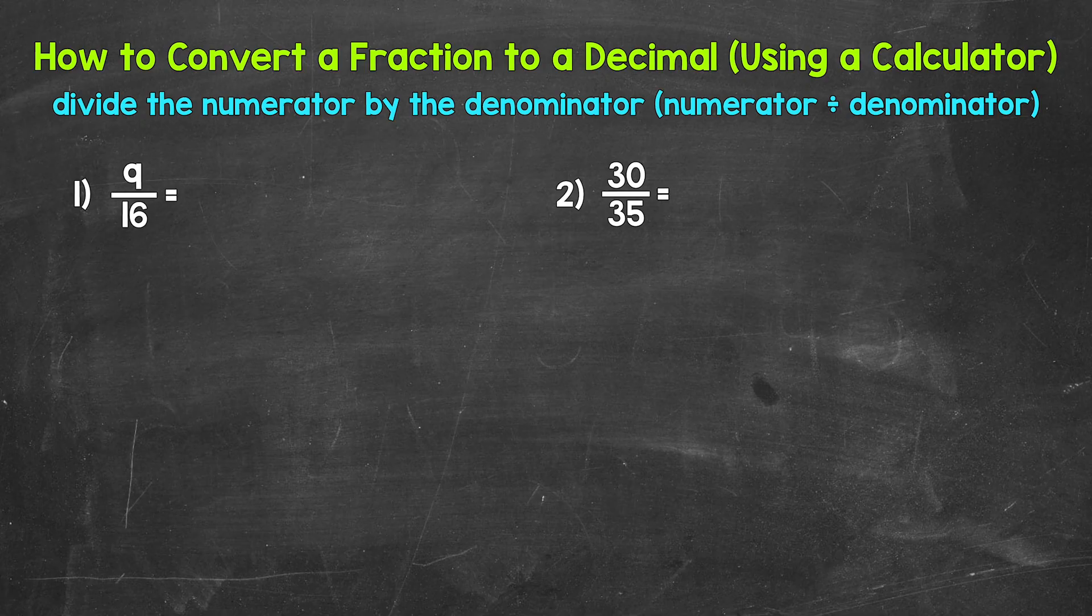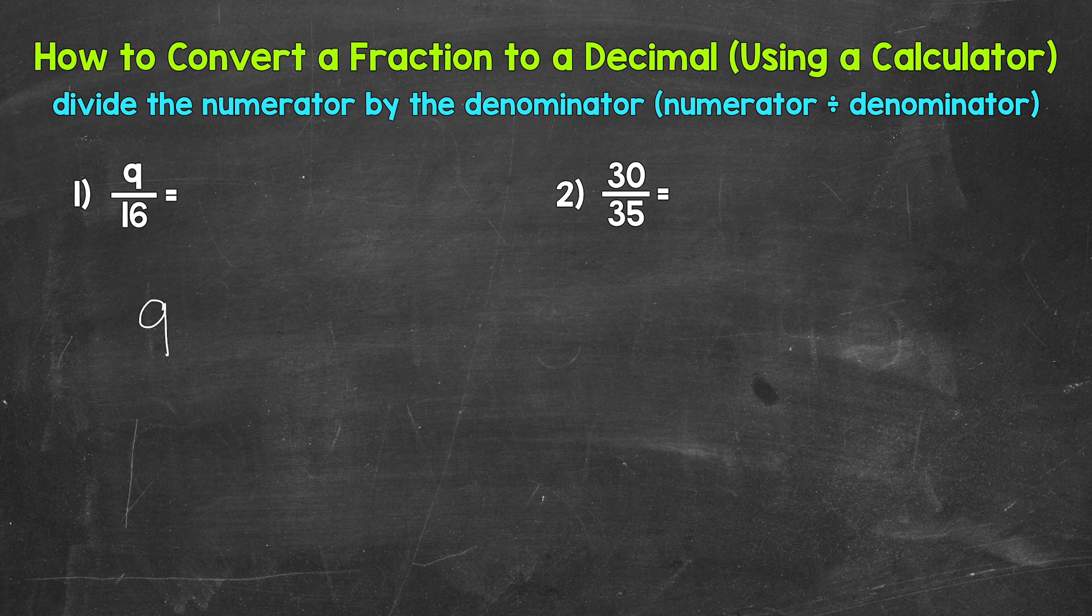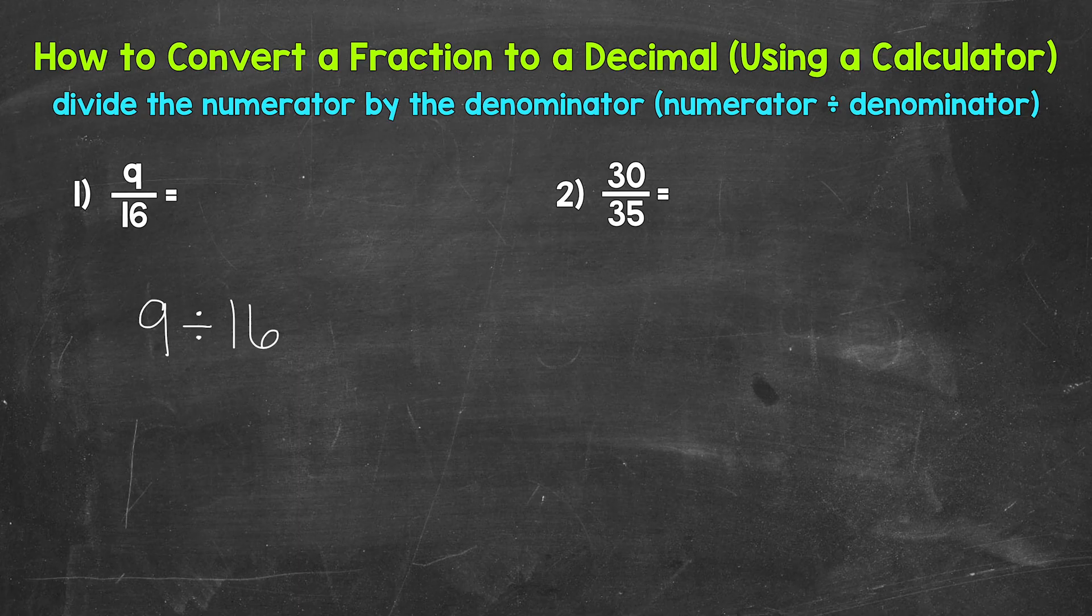This will give us a decimal. Let's jump into number one, where we have 9 over 16, 9 sixteenths. So we need to divide the numerator by the denominator. So plug in 9, the numerator, divided by 16, the denominator. This gives us 0.5625.